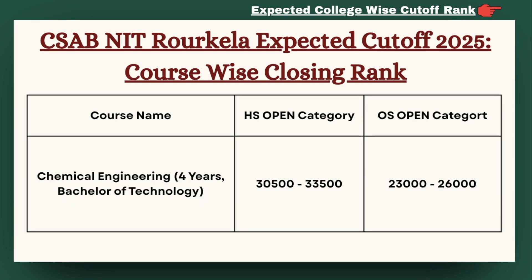Moving ahead in the list, we have Chemical Engineering. For HS category, the cutoff can be expected between 30,500 to 33,500. For OS category, the cutoff can be expected between 23,000 to 26,000.